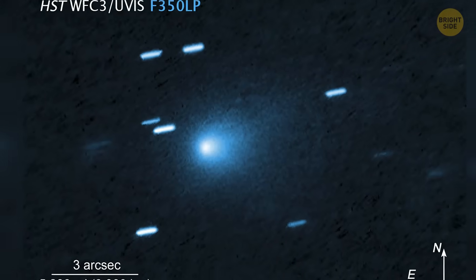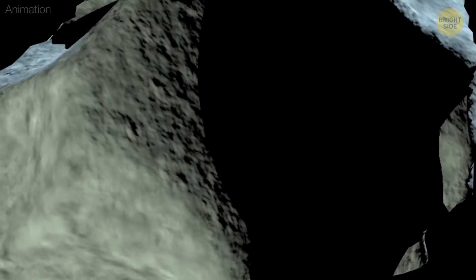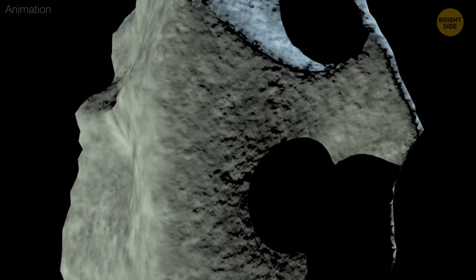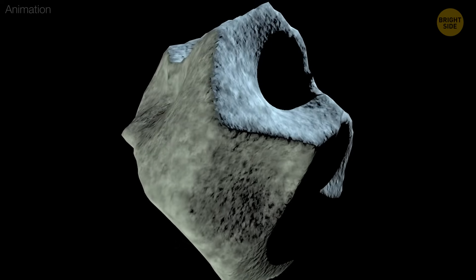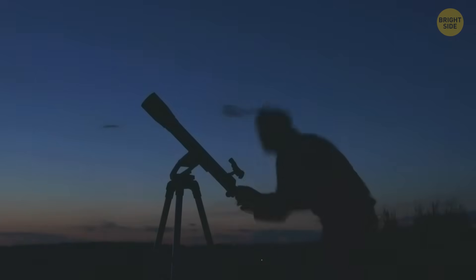Now, let's get back to the mystery of 3I Atlas. Before anything else, let's explain what 3I Atlas actually is. It's most likely a comet, basically a huge, dirty snowball flying through space. You can't see it with your own eyes or with a regular telescope.